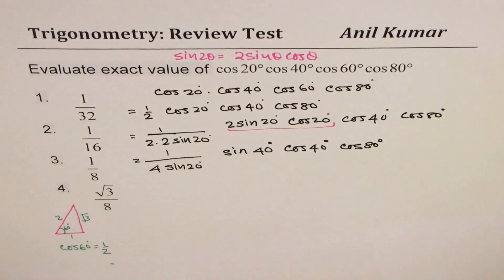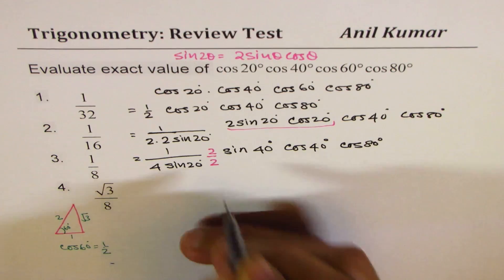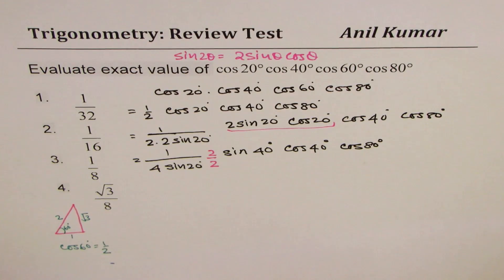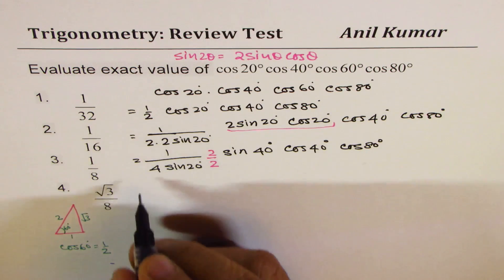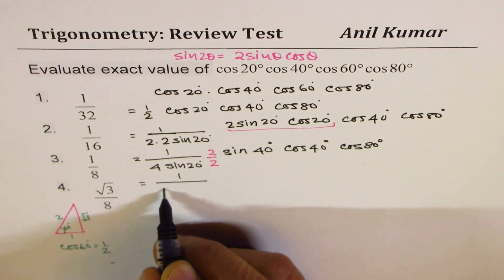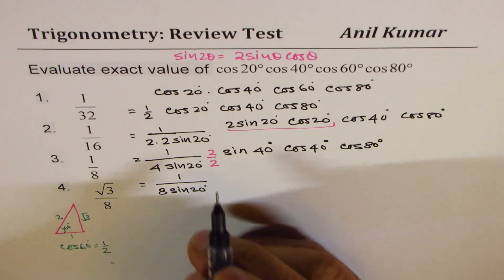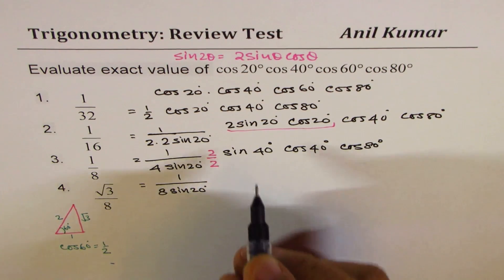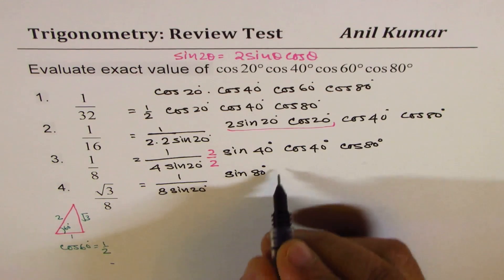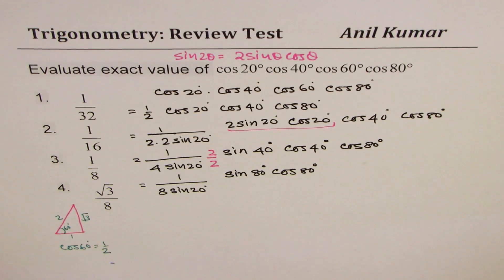Now to get a factor of 2 again, we can again multiply and divide by 2. So it becomes 2 sine a cos a. Now again we'll apply the same formula which results into 1 over 8 times sine of 20°. In the numerator, 2 sine 40° cos 40° gives us sine of 80° and we already have cos of 80°.